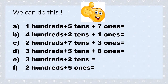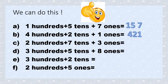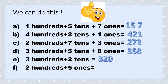Let us try this one. If you have 1 hundred, 5 tens, and 7 ones, we will get 157. If we have 4 hundreds, 2 tens, and 1 one, we will get 421. If we have 2 hundreds, 7 tens, and 3 ones, we will get 273. If we have 3 hundreds, 5 tens, and 8 ones, we will get 358. If we have 3 hundreds and 2 tens, we will get 320. If we have 2 hundreds and 5 ones, we will get 205.